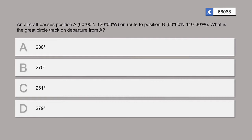The question is taken from the Aviation Exam database, question number 66068. An aircraft passes position A at 60°N 120°W, en route to position B at 60°N 140°30'W. What is the great circle track on departure from A?